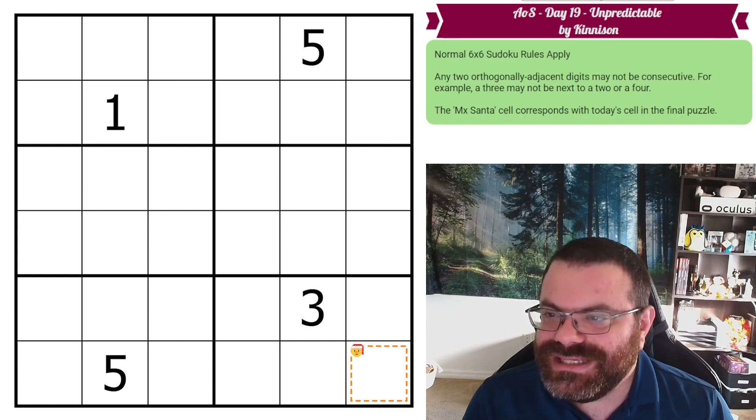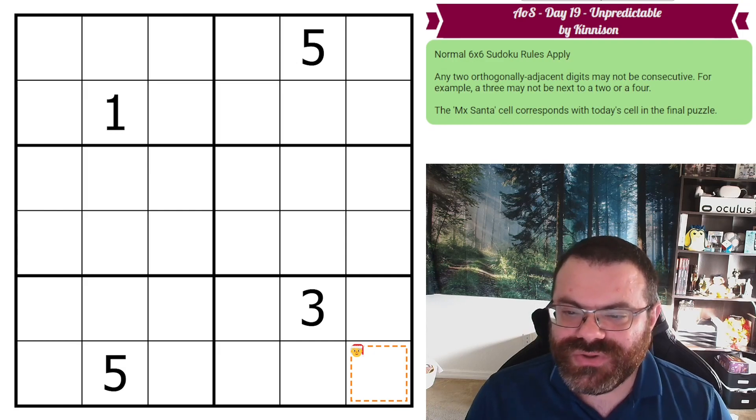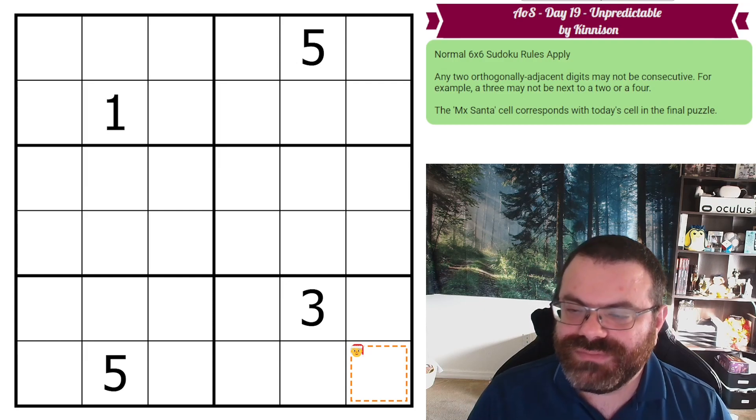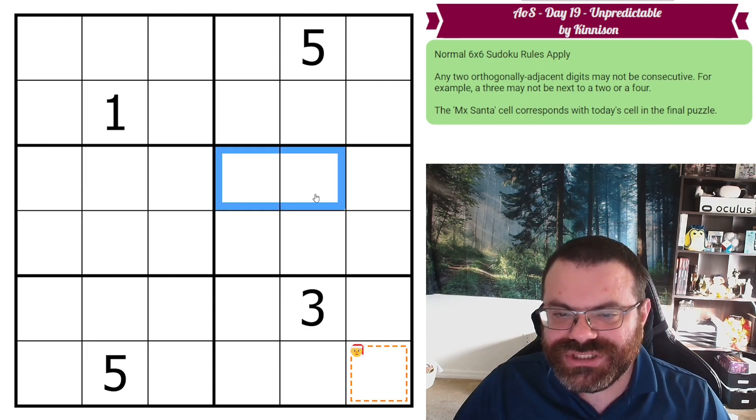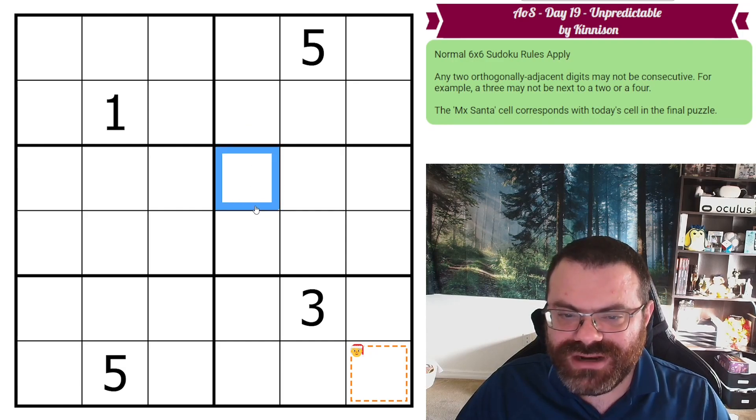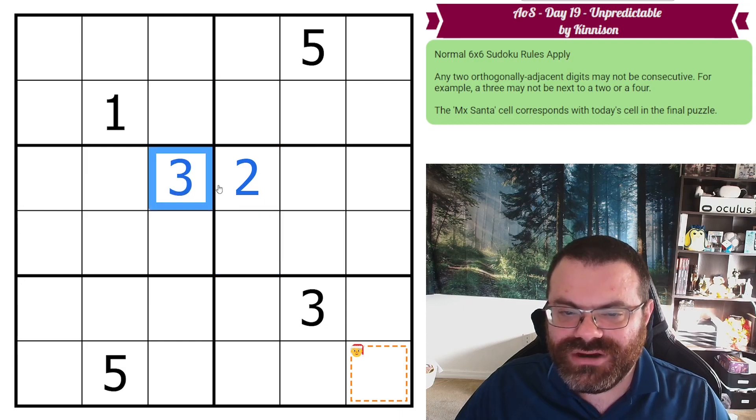So Day 19, this is called Unpredictable, and it's by Kinesin. This is a non-consecutive Sudoku. We have normal 6x6 rules, but also for any two adjacent digits that share an edge, you're not allowed to have those be consecutive. So if I put a 2 here, then none of these digits can be a 1 or a 3, because 1 and 3 are consecutive with 2, so that would not be allowed.